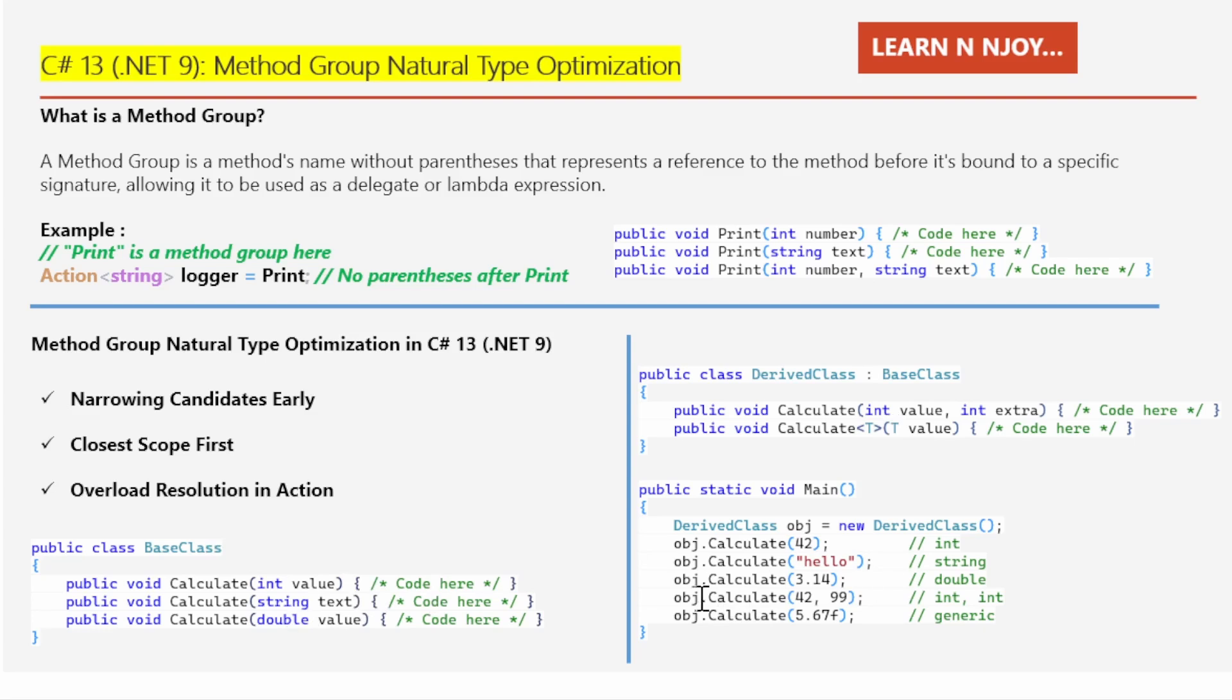And if you see the third one, obj.calculate(3.14), here I'm passing a double value. So it will check in the derived class. The derived class does not have the calculate method that accepts double as an input parameter. So it again checks in the base class. Here it finds this calculate(double value) method. So that's the one it's going to invoke.